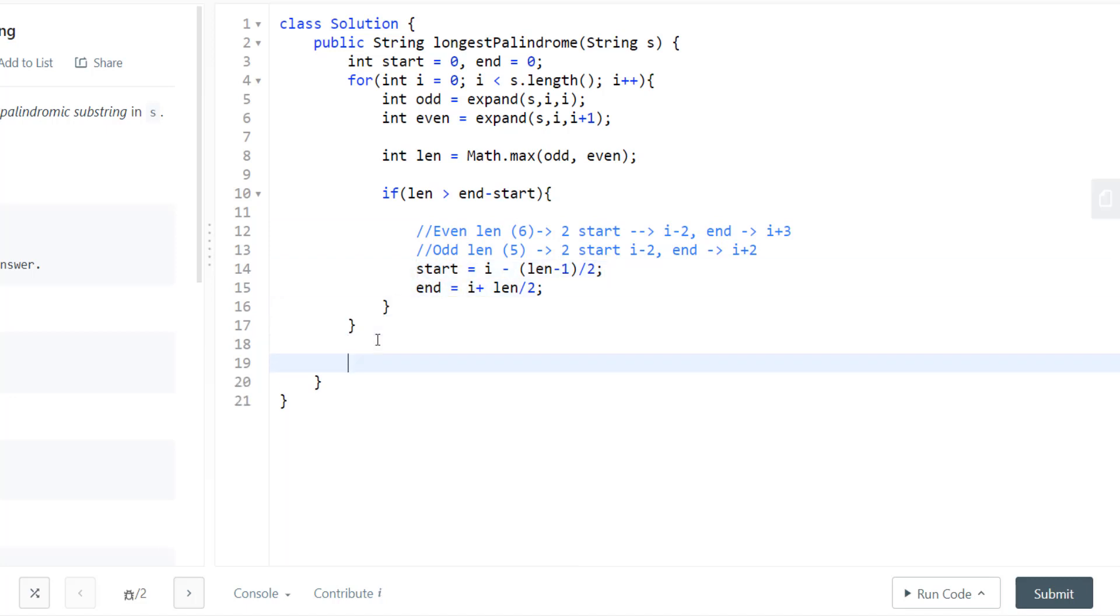Now once we have a result with us, we need to return the substring that will include my start and my end. But to include end, I'll have to do end plus 1 because the substring method does not include the end. So I'll have to do an end plus 1 to include my end index.